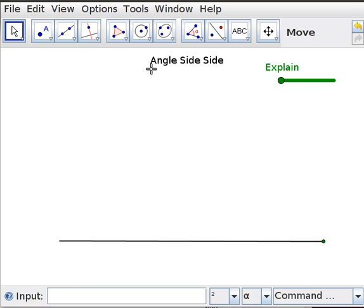So angle-side-side, we're going to start off with three bits of information: the size of an angle, the length of a side, and then the length of the next side. So that's what we're going to do, start with this angle. Imagine this long line here—well, you can't just start with an angle. This is like the workbench,